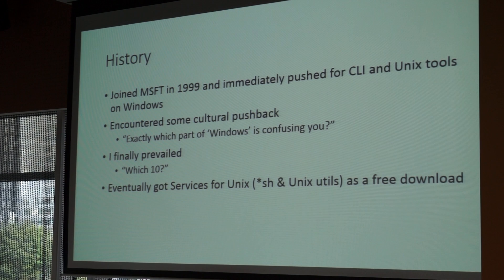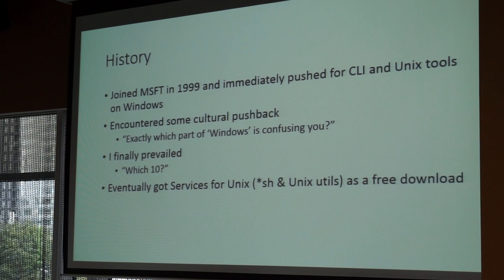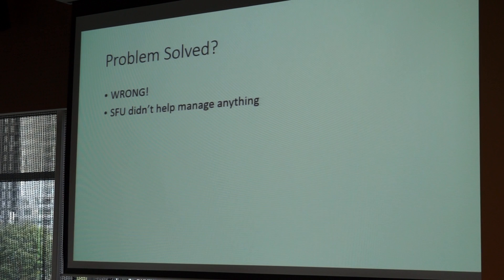Eventually I fought for getting a product called Services for Unix — all the Unix shells and utilities — installed in Windows. I came that close, but at the very last moment they said we can't be 100% sure it's IP-clean, and if anyone claims a line of code, they could force us to stop shipping Windows. So the risk was too great; we made it a free download instead. Problem solved, right? Got Unix utilities on Windows — it did not work at all. It was completely useless.